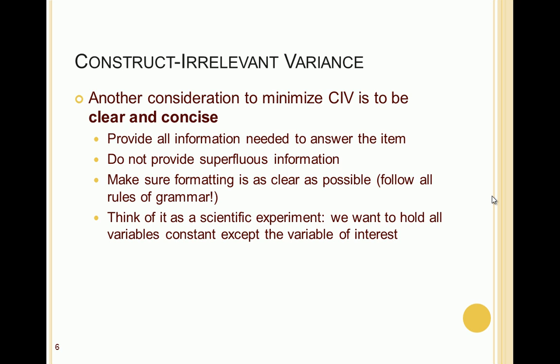You can also think of an item as a scientific experiment. When performing a scientific experiment, you typically want to hold all variables constant except your variable of interest. In item writing, we don't want to know anything about somebody's reading comprehension, reading speed, numerical skill, or skill with computers — we just want to know their knowledge of science, or whatever it is you're trying to measure. So we want to minimize the impact those other variables will have on how candidates answer the question.